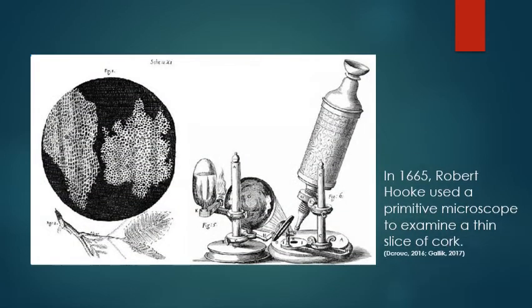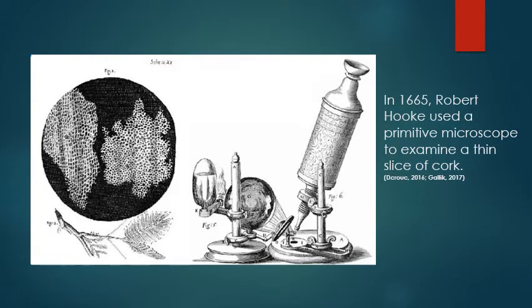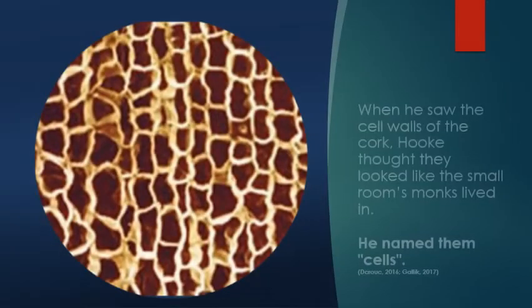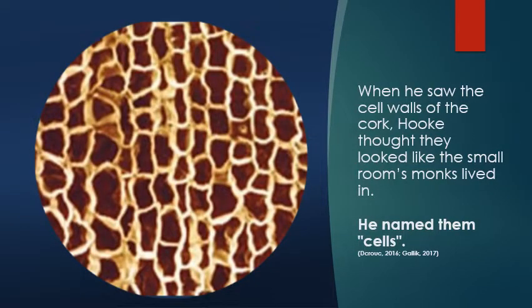In 1665, Robert Hooke used a primitive microscope to examine a thin slice of cork. When he saw the cell walls of the cork, Hooke thought they looked like the small rooms that a monk would live in. He named them cells.